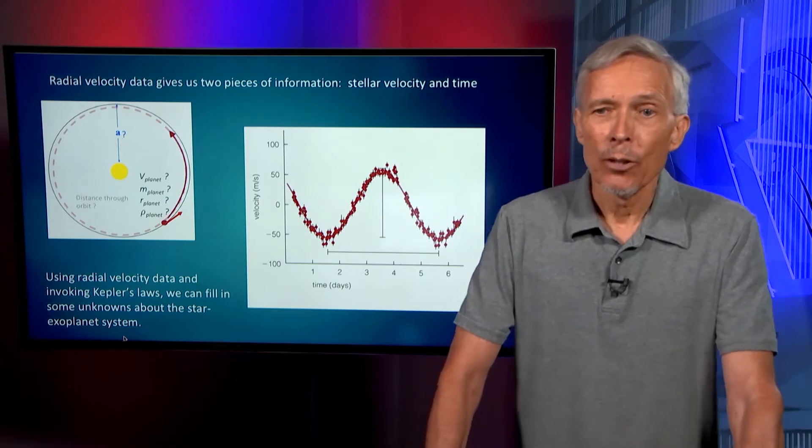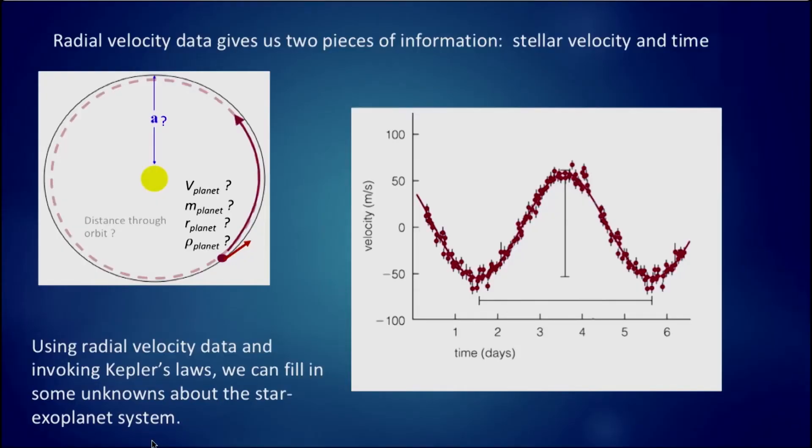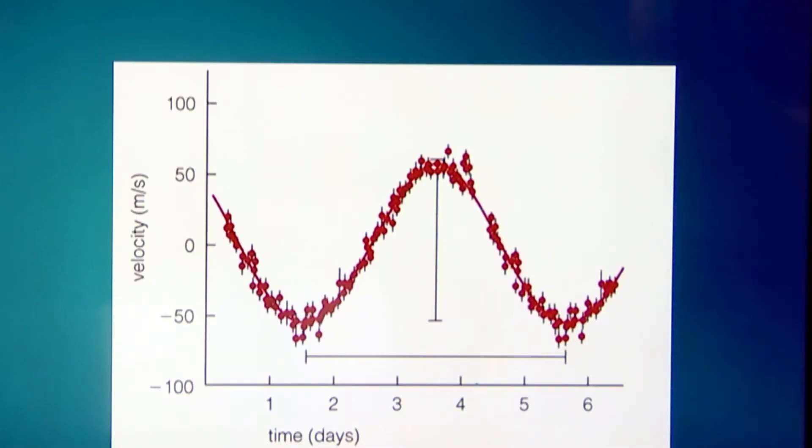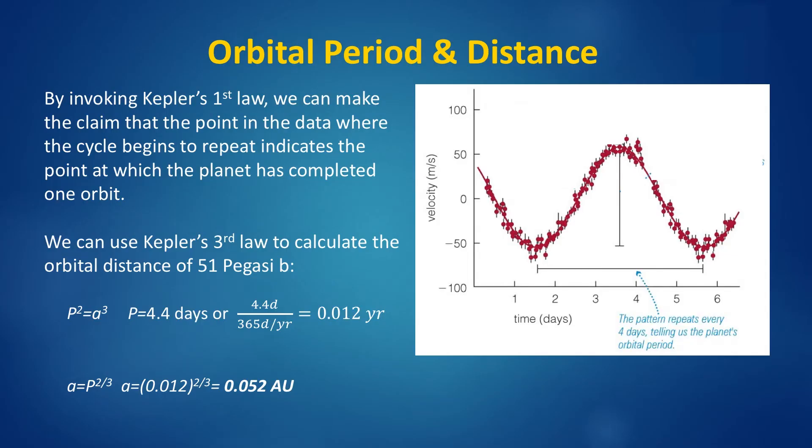The radial velocity method gives us two pieces of information. It's the stellar velocity over time, and that's the map we see here, the situation of 51 Peg that we've seen before. Using radial velocity data and invoking Kepler's laws, we can learn some things about the star-exoplanet system. By invoking the first law, we claim the point in the data where the cycle begins to repeat is the point where the star and the planet have each completed an orbit about their common center of gravity. In this situation, using the discovery data of 51 Peg, we can use Kepler's third law to calculate the orbital distance of 51 Peg b planet based on its orbital period of 4.4 days.